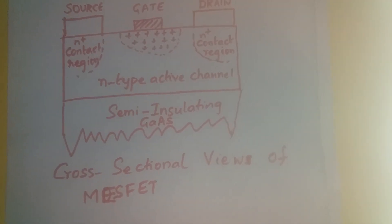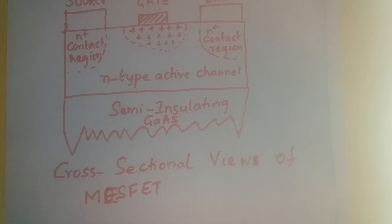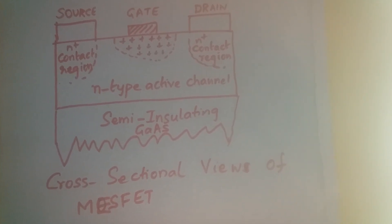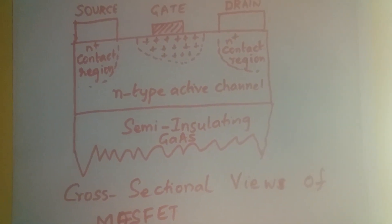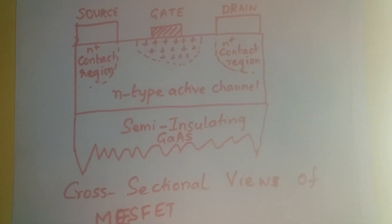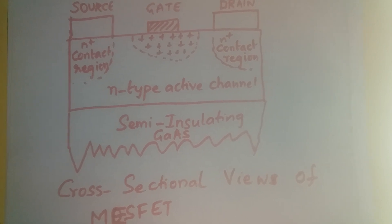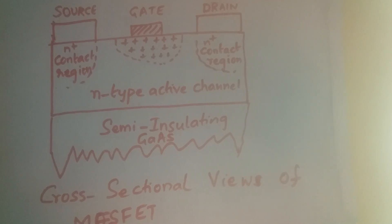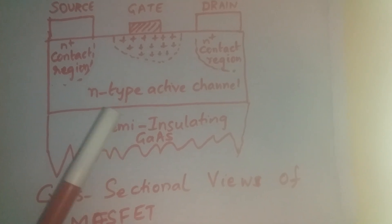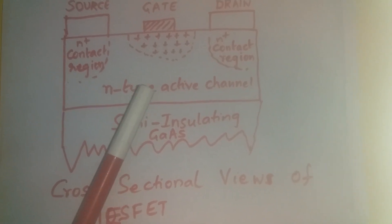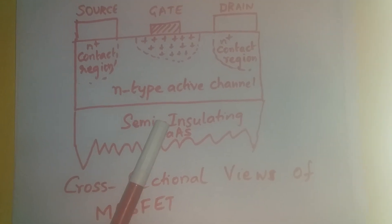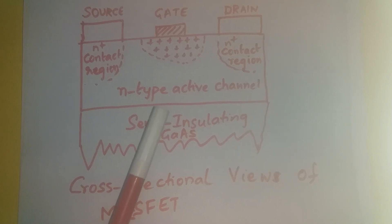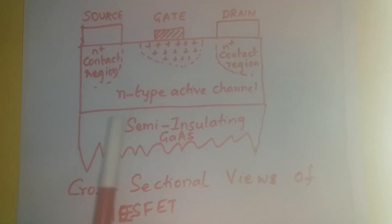So this is the cross-sectional view of the MESFET. What does MESFET consist of? It consists of three electrodes: source, gate, and drain. The substrate is the semi-insulating gallium arsenide. And you see that the active layer, that is the N-type active layer, is either ion implanted or is epitaxially grown over this semi-insulating gallium arsenide substrate.